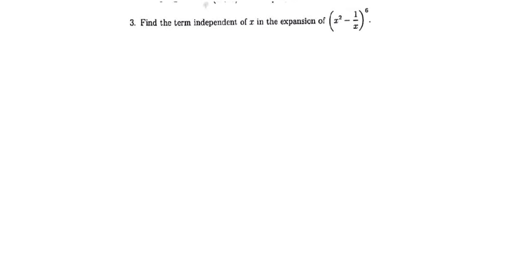Alright, so we'll look at question 3, which is asking us to find the term independent of x in the expansion. The expansion we're given is x squared minus 1 over x, raised to the power 6. So finding the term independent of x implies we have to find a term which does not have x as a variable.